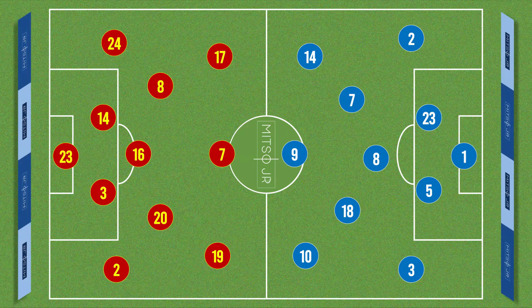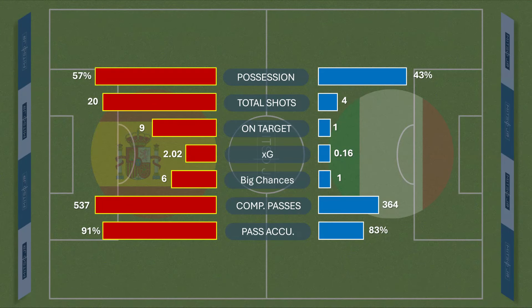Starting off, both teams used a 4-3 formation as you can see on the screen. Spain was looking better with the ball, especially during the first half, and the stats even showed that they were the better side throughout the match.